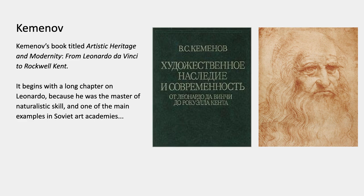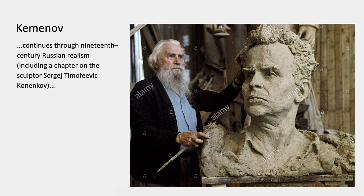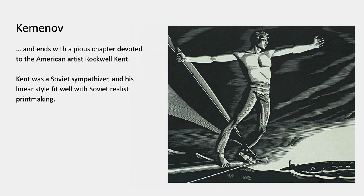The book begins with a long chapter on Leonardo da Vinci because he was a master of naturalistic skill. Leonardo was also one of the main examples given to students in Soviet art academies learning socialist realism, along with Rembrandt. The book continues through 19th century Russian realism and ends with a very pious chapter full of praise devoted to the American artist Rockwell Kent — because Kent was a Soviet sympathizer and his linear style fit well with Soviet realist printmaking. That narrative would only seem believable in a very small circle of students and colleagues.